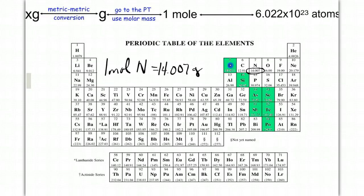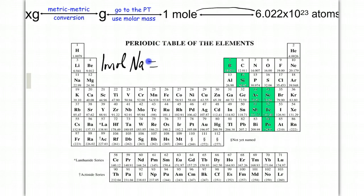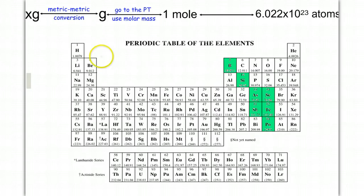Depending on your periodic table, they're all rounded off at different decimal places. So now that we understand the connection between mole and gram, let's look at the connection between mole and atoms. One mole of any substance — we'll use sodium again — one mole of sodium is also equal to 6.022 times 10 to the 23 atoms of sodium.